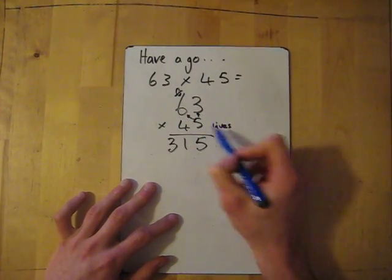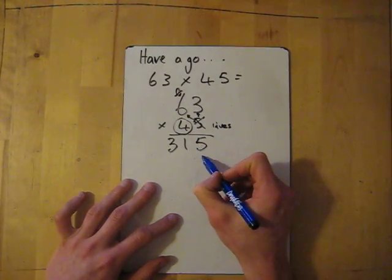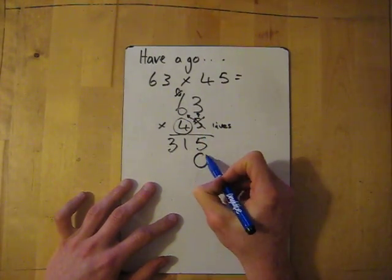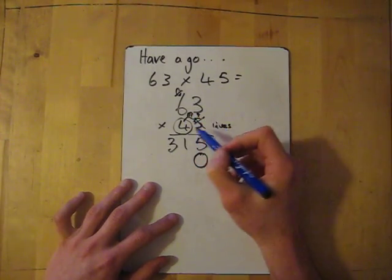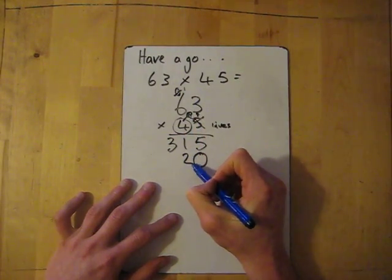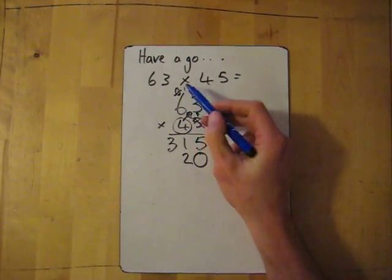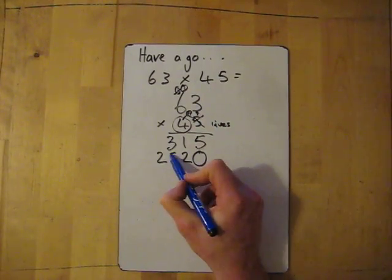Okay. Now we're multiplying with our second life. We've used up the first life. So the second life is a four. So put the, it's not four, it's a 40. So put the zero in the gap. So four times three is 12. So put down the one, carry the two. Then four times six is 24, then add the one, it's 25. Put it down.